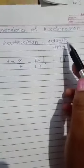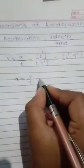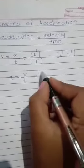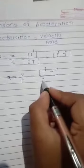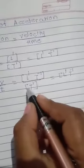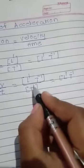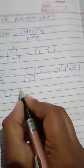Now put these dimensions of velocity into the equation of acceleration. Again, acceleration is equal to change in velocity with respect to time. The dimensions of velocity are L raised to 1, T raised to minus 1, and the dimensions of time are T raised to 1. So we have L raised to 1, T raised to minus 1, divided by T raised to 1. The T raised to plus 1 shifts to the numerator and its sign converts to minus 1, giving T raised to minus 1. Combining: L raised to 1, and minus 1 plus minus 1 gives T raised to minus 2.